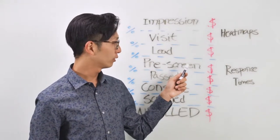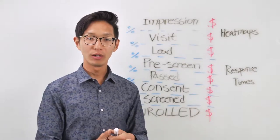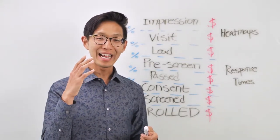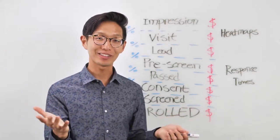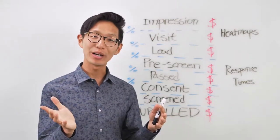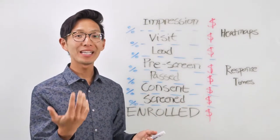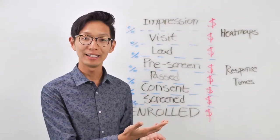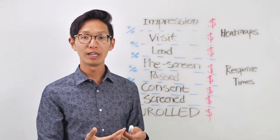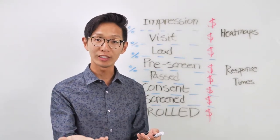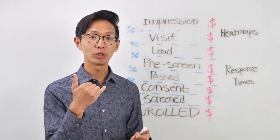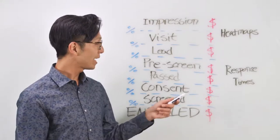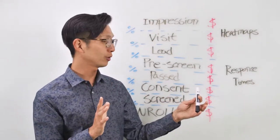Same thing holds true for prescreen. So a prescreen completion is anyone who's obviously completed a prescreener. And that can also come through a lot of different channels. It might not be that a majority of your prescreeners are administered online, but that a majority are administered with someone on your team walking the patient through a survey over the phone. Whatever the case might be, make sure that you're capturing all those channels in your analysis.